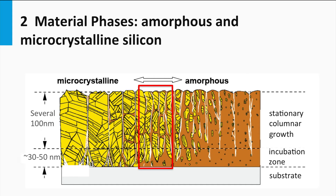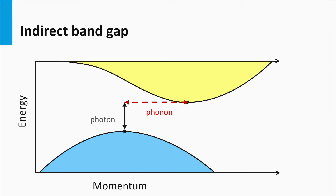The bandgap of nanocrystalline silicon is close to that of crystalline silicon due to its crystalline network. The bandgap of amorphous silicon is larger relative to crystalline silicon. The distortions in bond angles and bond lengths make the bandgap larger. An important consequence of a disordered lattice is that the electron momentum is poorly defined, in contrast to crystalline silicon.